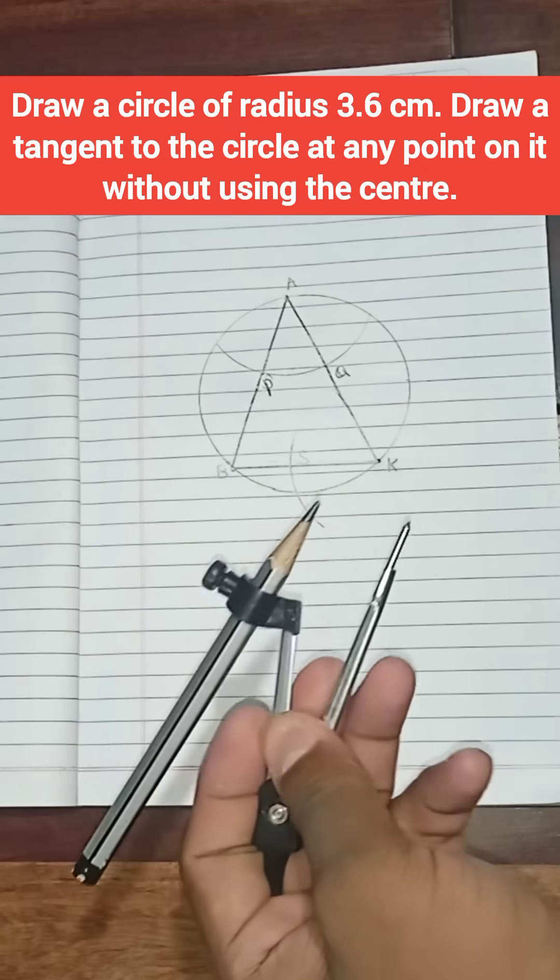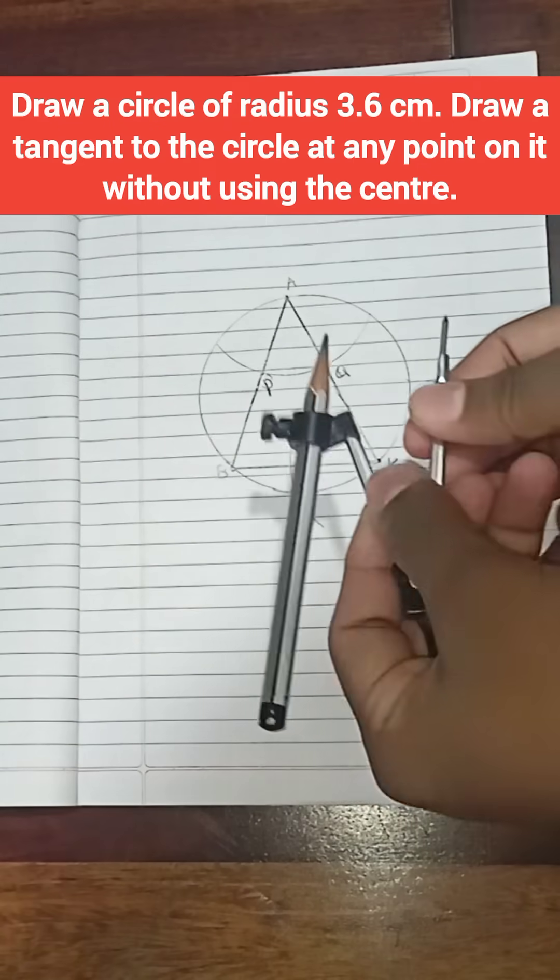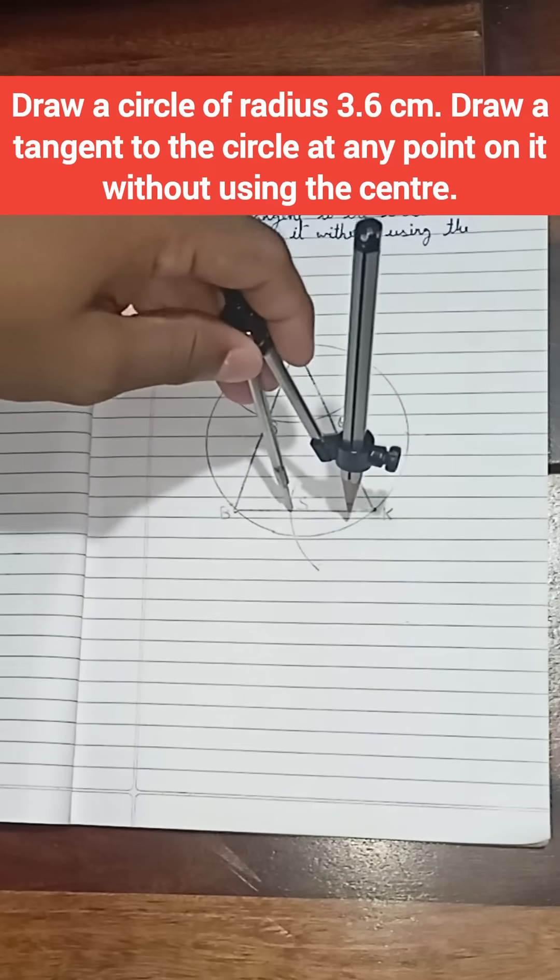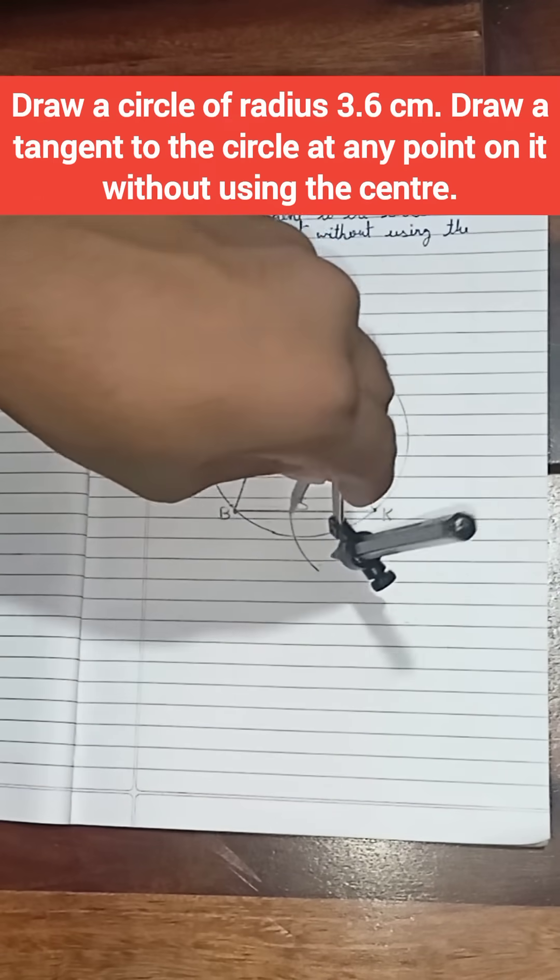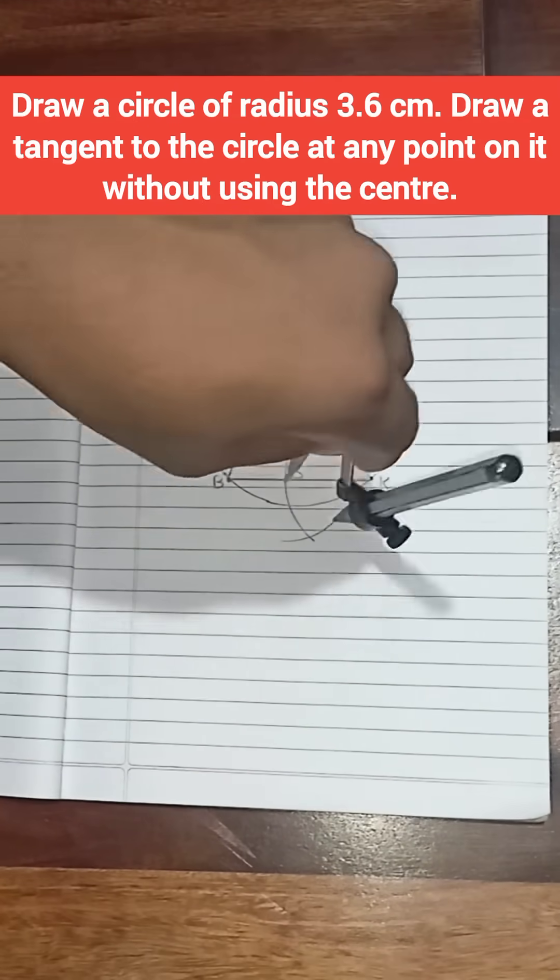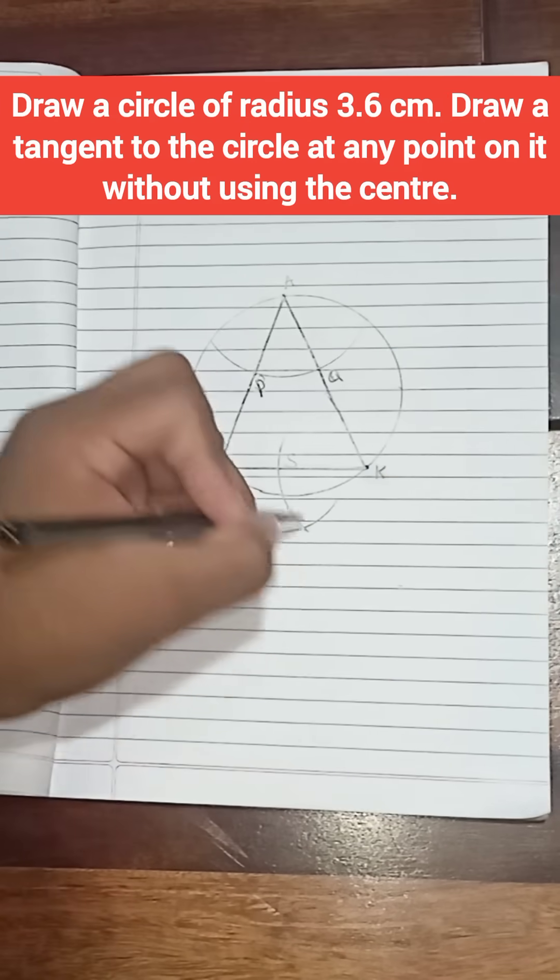Take a compass and measure the P cube. Now keep the rounder on point S and make an arc. And name this point R.